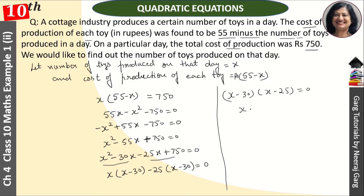So in the next step, we have x minus 30 and x minus 25, that is equal to 0. So x is equal to 30 and 25. The number of toys produced on that day is equal to 30 or 25.